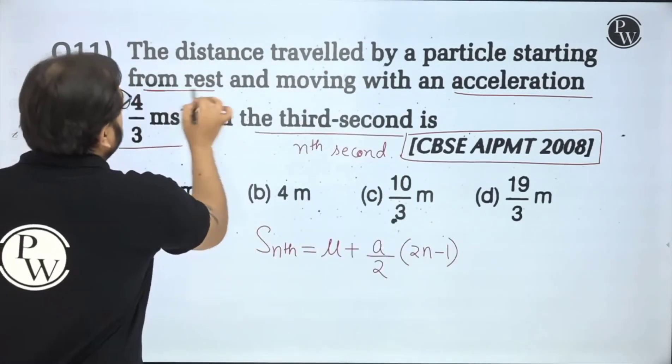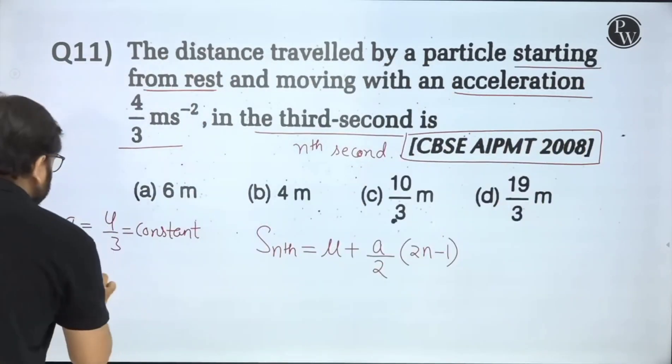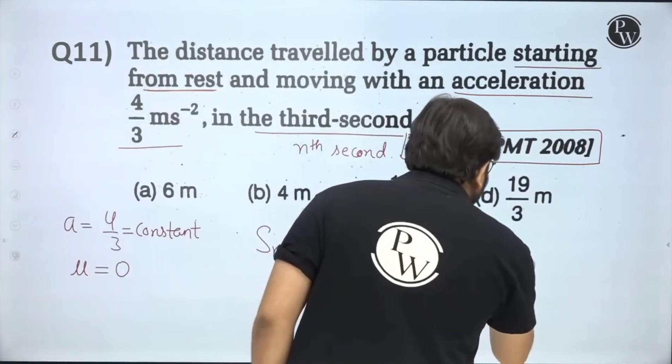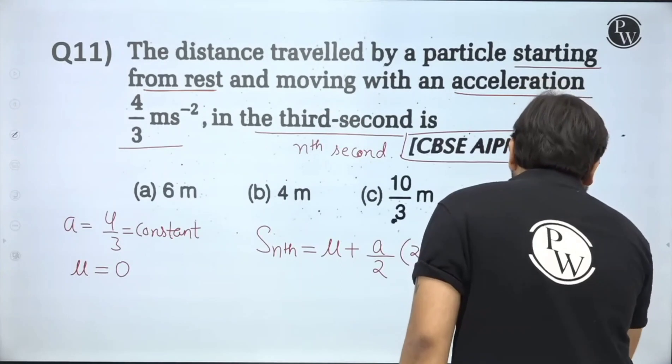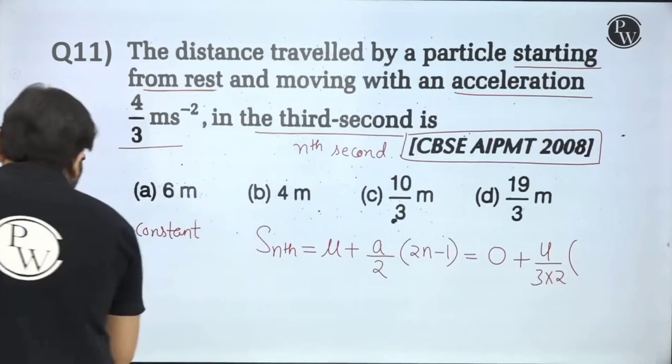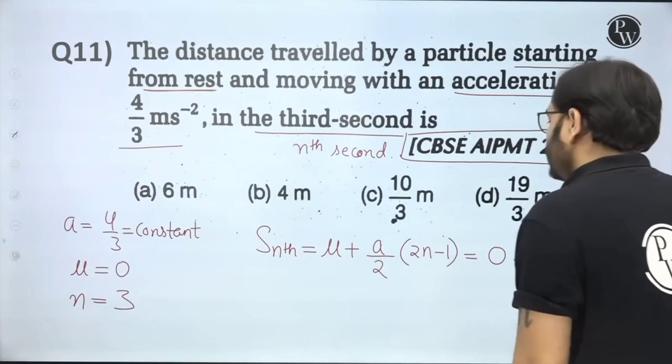U initial velocity starting from rest, a particle starting from rest. Starting from rest, initial velocity zero chip, acceleration is 4 by 3 divided by 2, 2N minus 1. N is 3, so 2N minus 1, so 2 into 3 minus 1.